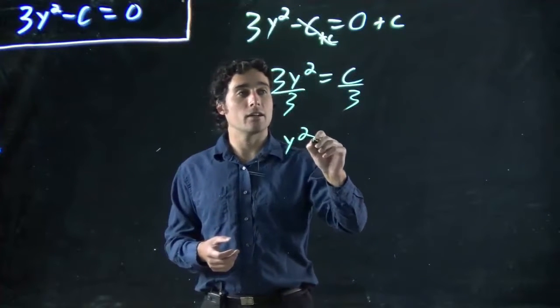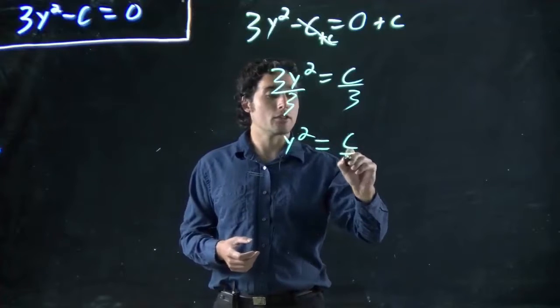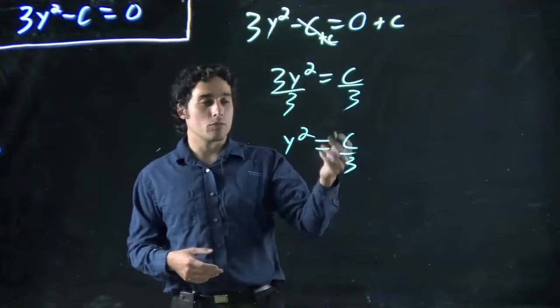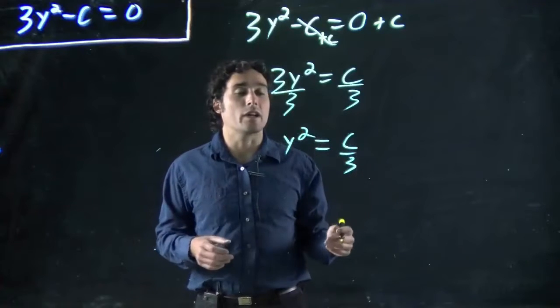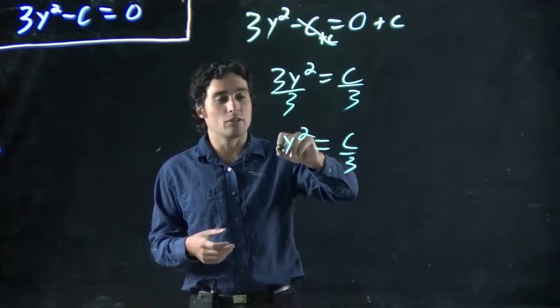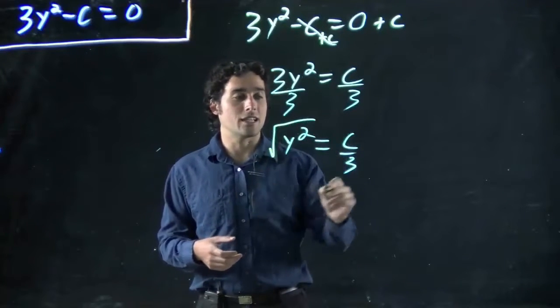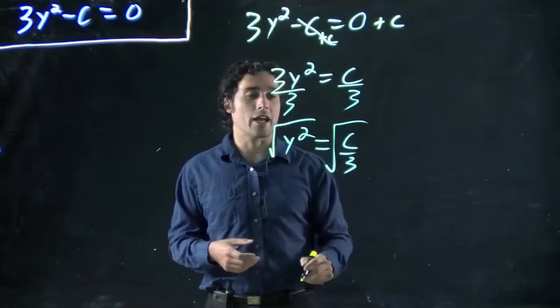So I get y squared equals c over 3. And again, to get rid of a squared, you take the square root or put it to the power of 1 half. In this case, I'll use the square root because it is the same as to the power of 1 half.